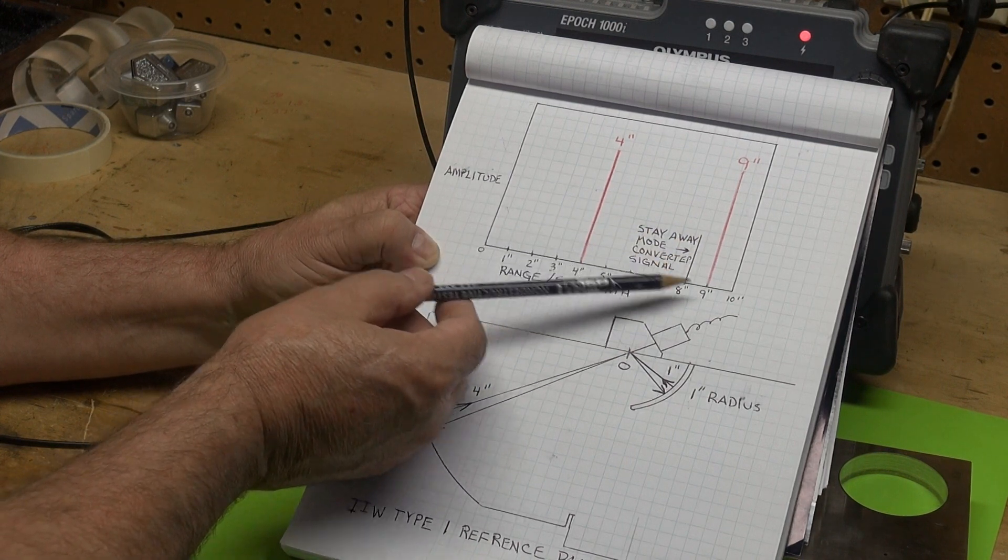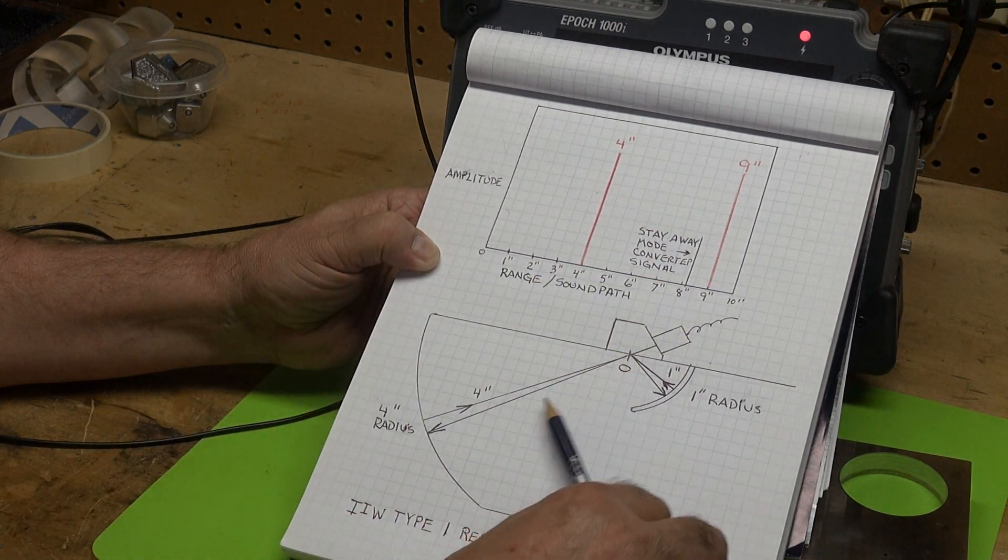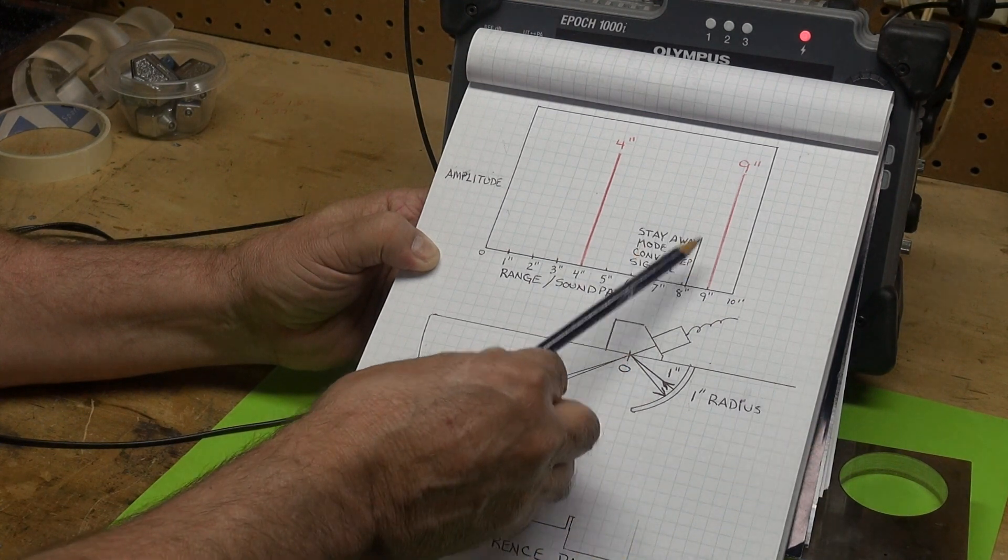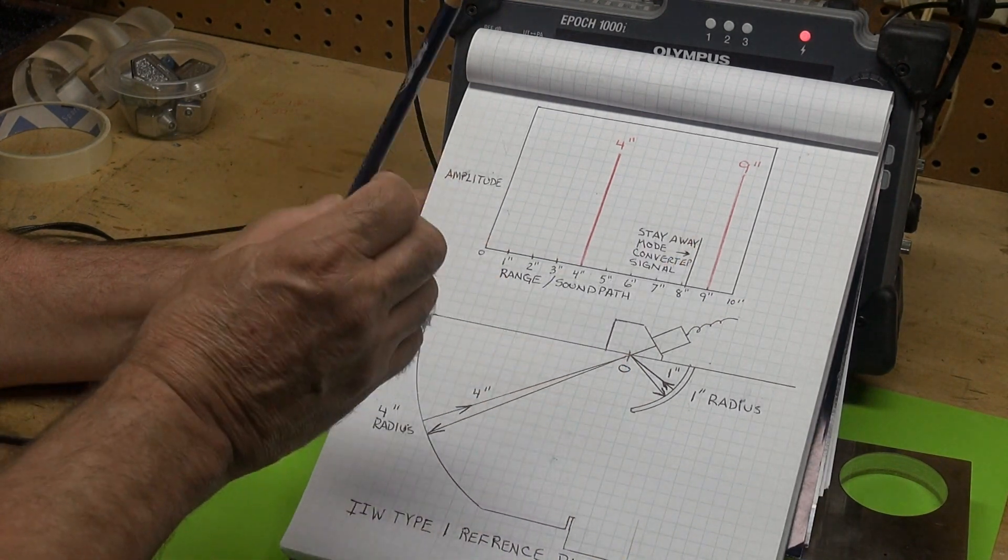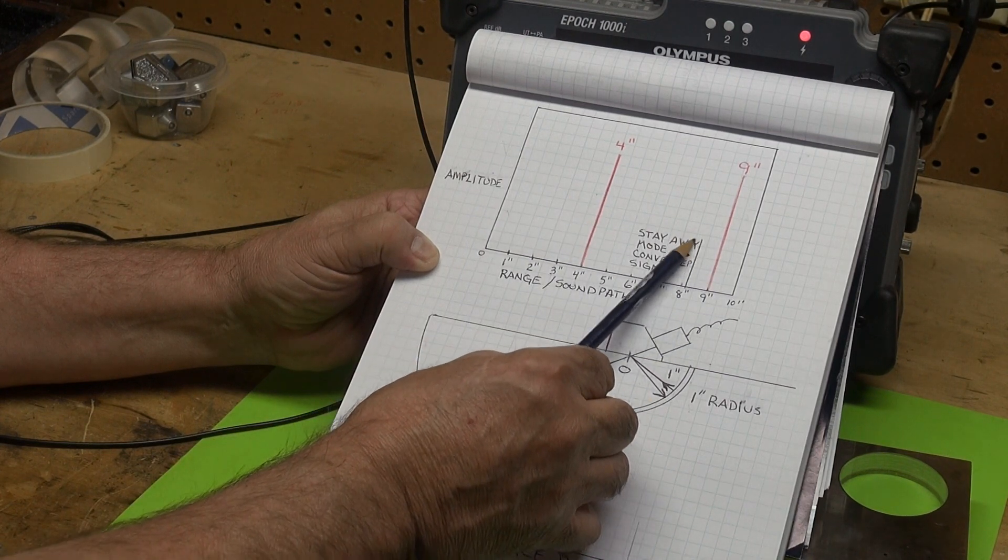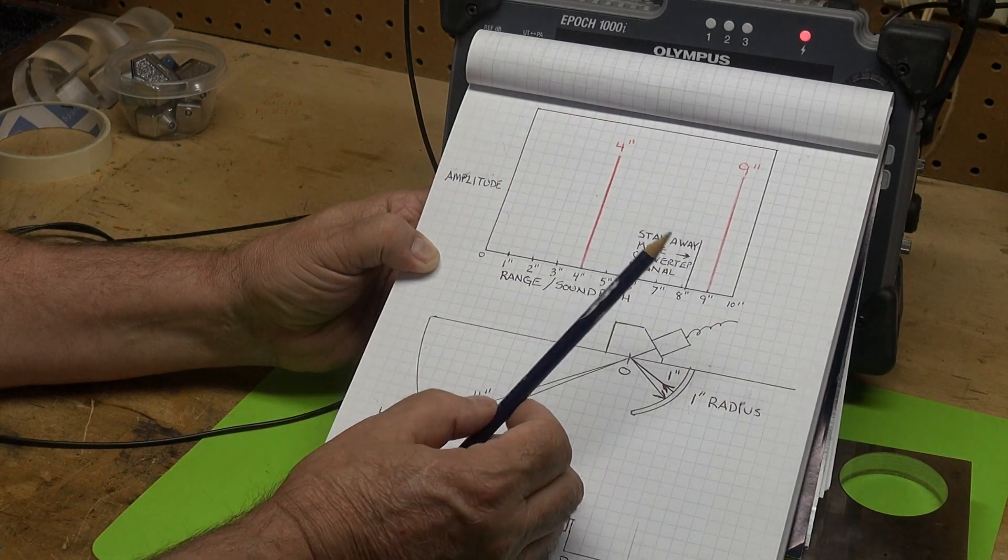Stay away from that as a mode converted signal. Because of the sound path at 9 inches, we're bouncing off the side of this block. It's only an inch wide, so we're getting a mode converted signal. If you're not careful when you calibrate and you grab this, you're going to have a problem.